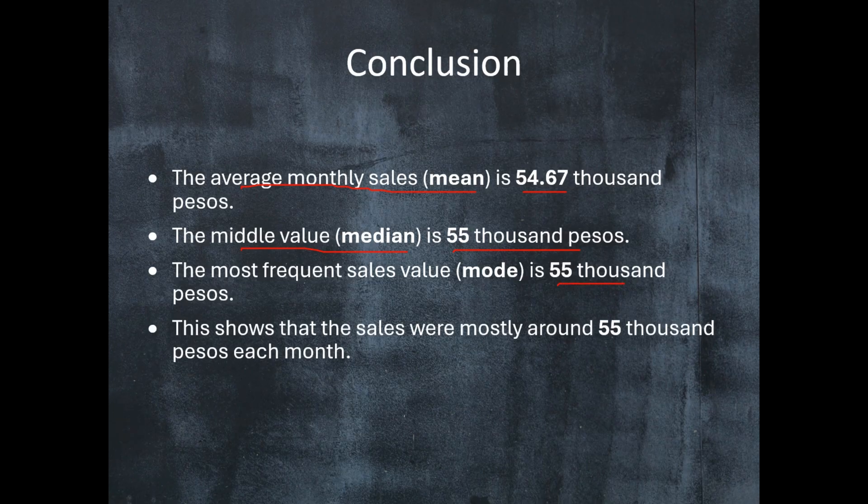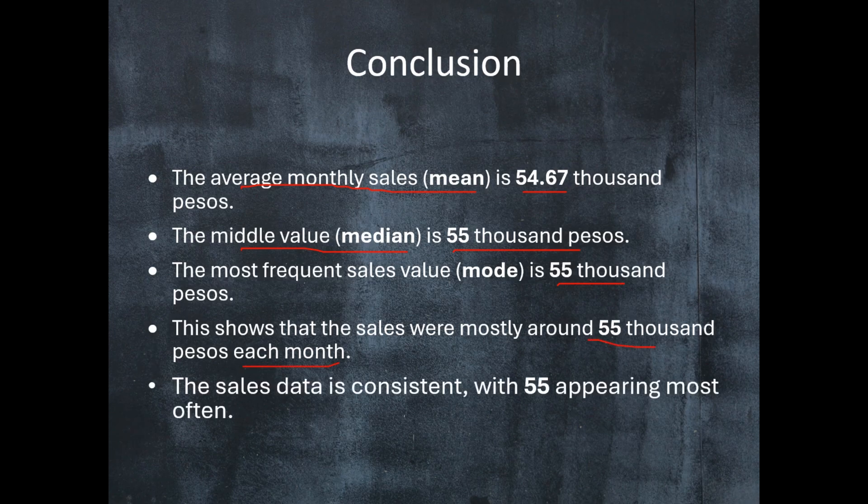Furthermore, this shows that the sales were mostly around 55,000 pesos each month and that the sales data is consistent, with 55,000 appearing most often.